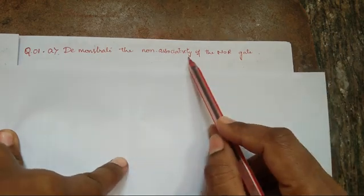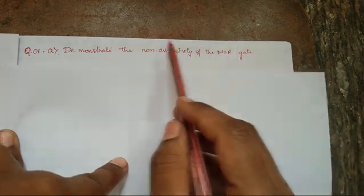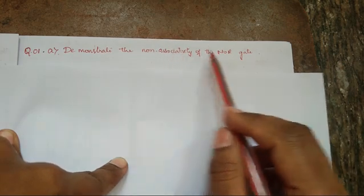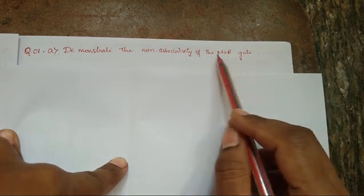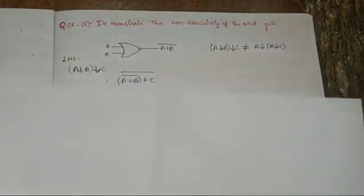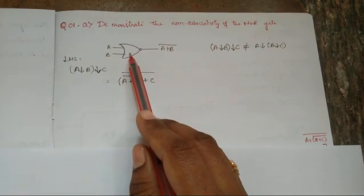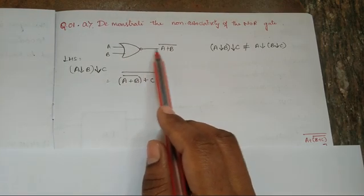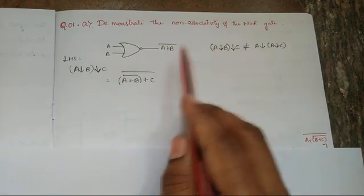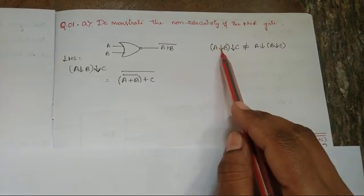Demonstrate the non-associativity of the NOR gate. They are asking us to explain the non-associativity of the NOR gate. The NOR gate is nothing but an OR gate followed by a NOT gate. The logical expression for the NOR gate is A plus B whole bar, and this is the symbol for the NOR gate.